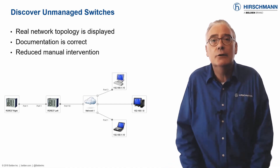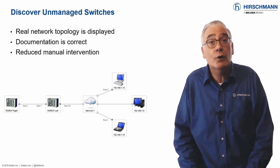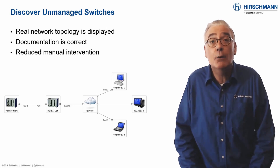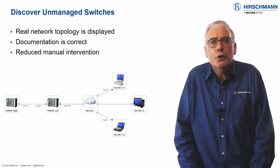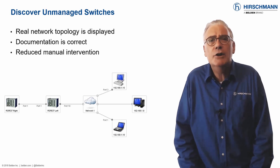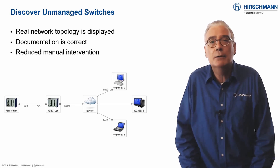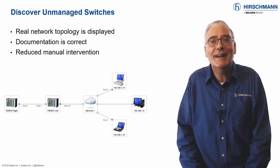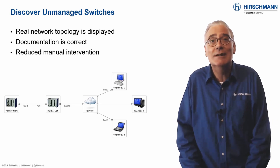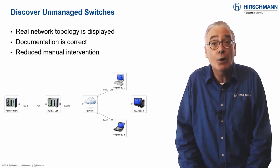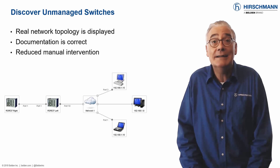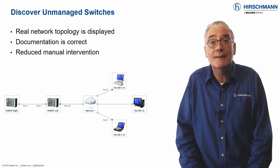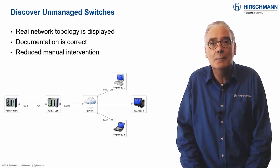Even so, it is still important to have an accurate overview of your complete network topology. You could manually draw the unmanaged switches in your network map, or you can allow Industrial HiVision to deduce the location of unmanaged switches and display them as part of the topology map.